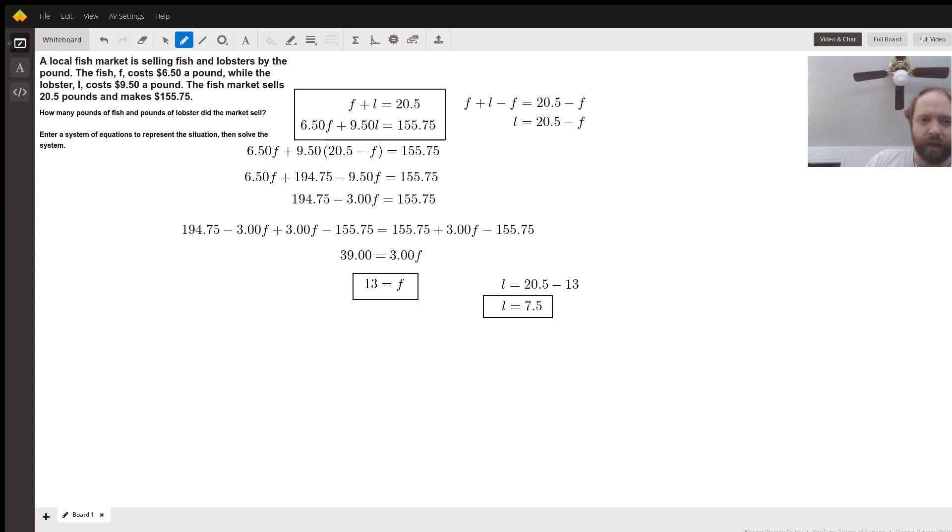We add those two together, we get $155.75. So we do in fact have 20.5 pounds, $155.75. So this does satisfy the parameters given in the problem and it is our correct solution. I hope that helps. Thanks.